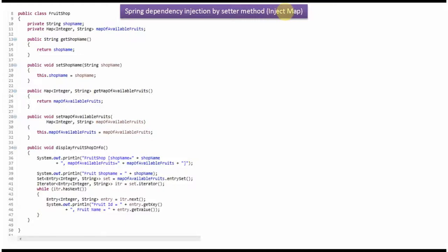This video tutorial covers how to inject a Map using Spring dependency injection by setter method. Here I have defined the class FruitShop. It has two properties: shop name and a map of available fruits. The map key is integer and value is string. I have defined getter and setter methods for these two properties, and it has a display fruit shop info method.